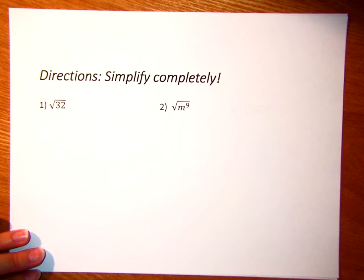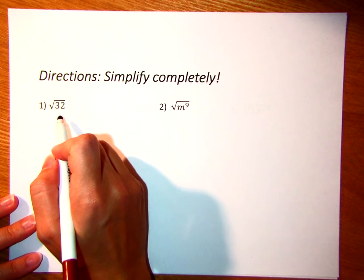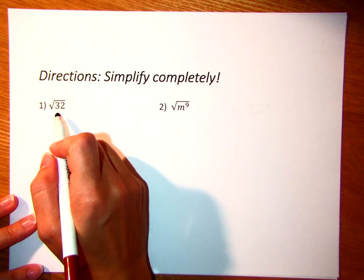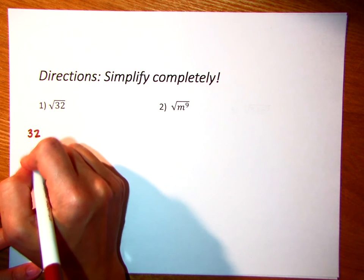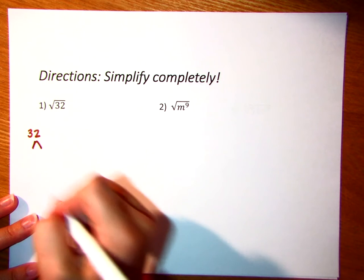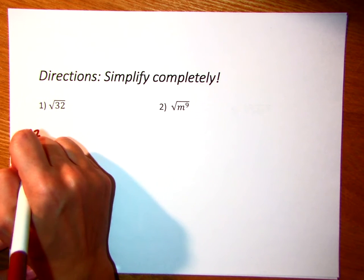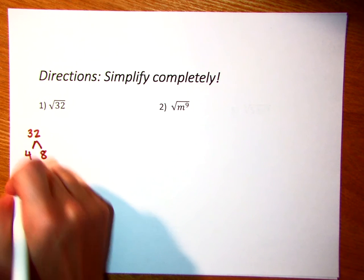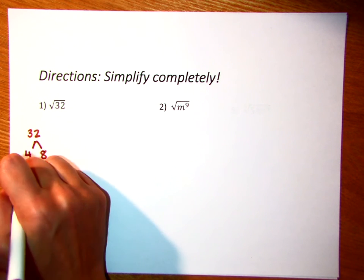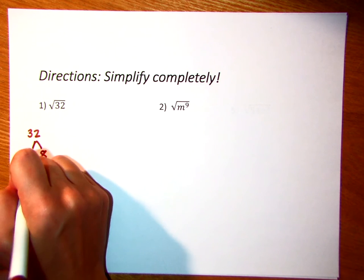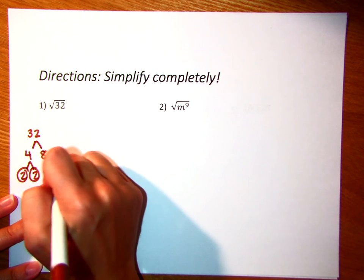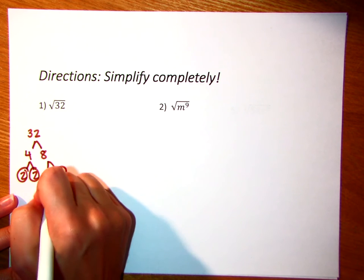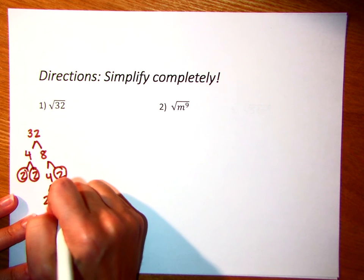Let's look at our first example. In our first example, it says we're going to simplify the square root of 32. So the first thing we're going to do is start with the prime factorization of 32. So 32 would be like 4 times 8, neither of which are prime, so we keep going. 4 is 2 times 2, those are both prime. 8 would be 4 times 2. 2 is prime, but we keep going with the 4. And then 4 is 2 times 2.